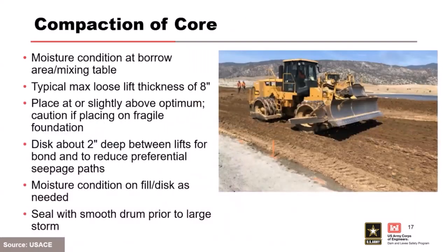For the core, typically we look at eight-inch thick loose lifts, and we've talked about being slightly above optimum. I mentioned earlier making sure you have bonds between lifts as well. If a storm event is coming, the typical procedure is to use a smooth drum roller to seal the top of that, and then of course you have to disk it. If you left the core exposed and a big storm was coming, it would be quite a quagmire afterwards. So seal with a steel drum roller, then take your disc to it after that storm event.